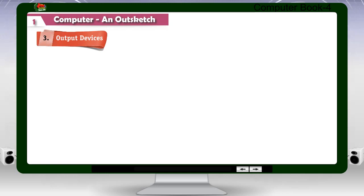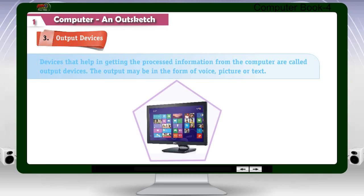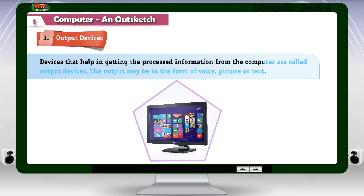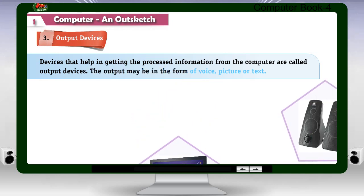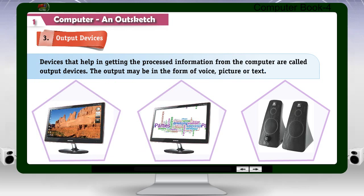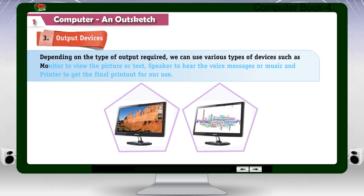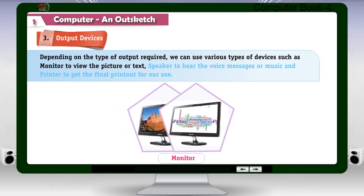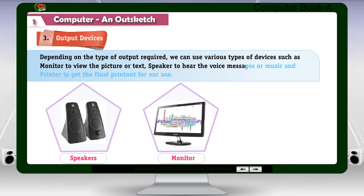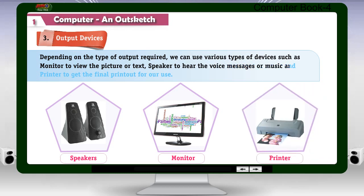Output Devices: Devices that help in getting the processed information from the computer are called output devices. The output may be in the form of voice, picture, or text. Depending on the type of output required, we can use various devices such as a monitor to view pictures or text, a speaker to hear voice messages or music, and a printer to get the final printout.